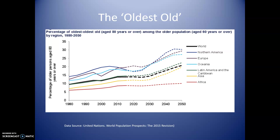Another graph shows the growth of the proportion of the population aged 80 and over, demonstrating that North America, Europe, and Oceania are going to lead this trend. We will talk in another lecture about something called frailty, which is linked to increasing age, and we'll see the implications of this rise in the oldest old population in terms of healthcare provision and, to an equal extent, economics.